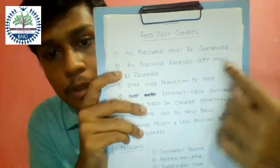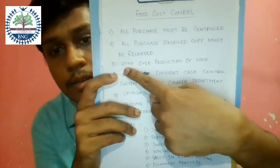All purchase received copies must be recorded. When you purchase an item, you should take the purchase received copy and keep a record, as it is the only proof of your purchase cost. Also, stop over-production of food. When you over-produce, your wastage cost will be high, which raises your food cost.